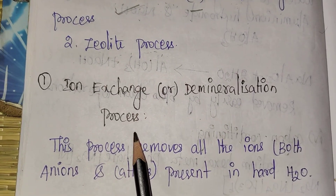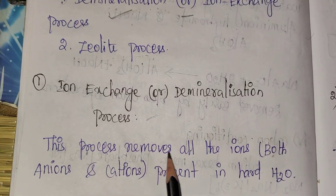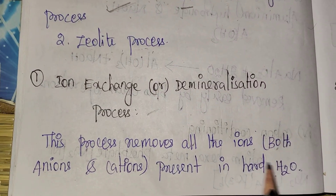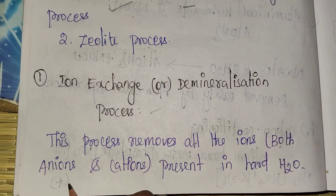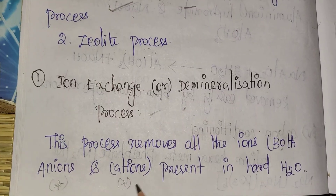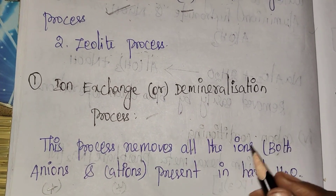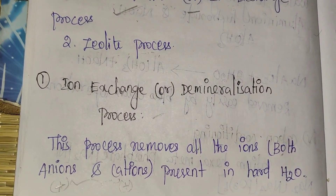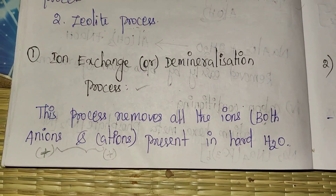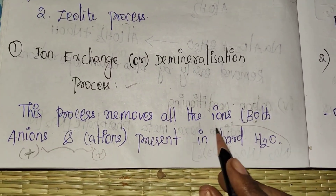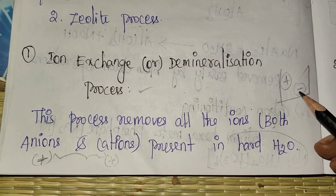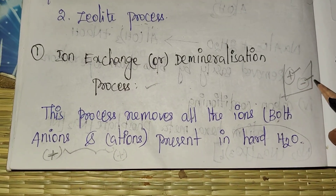Ion exchange or demineralization process: this process removes all the ions — both anions and cations — present in hard water. Cations carry a positive charge and anions carry a negative charge. All ions, including minus-charge ions, will be removed by this process.